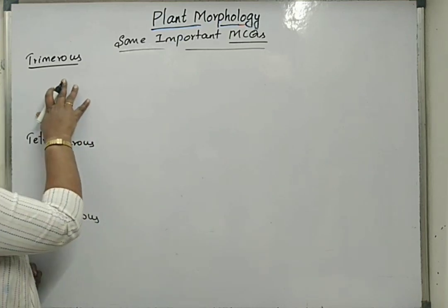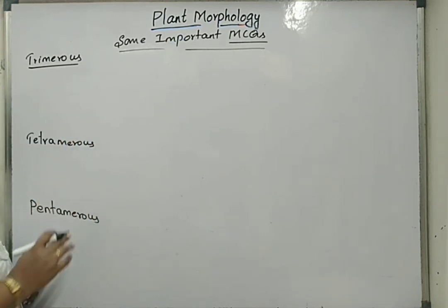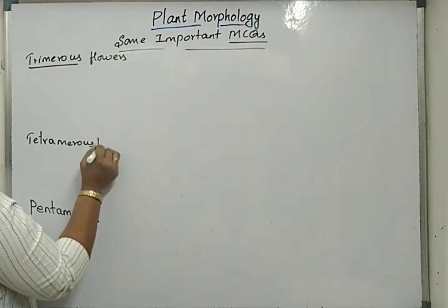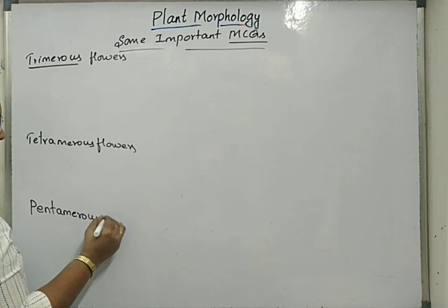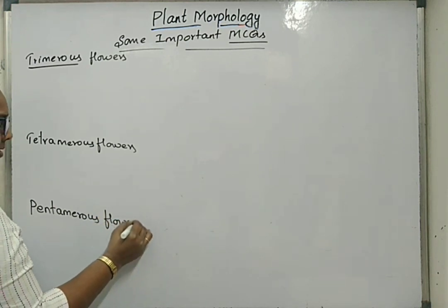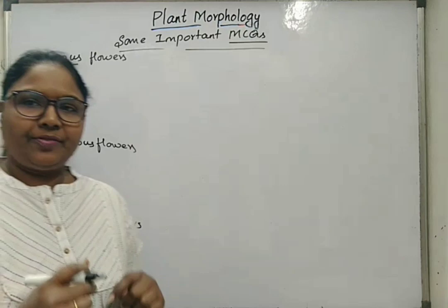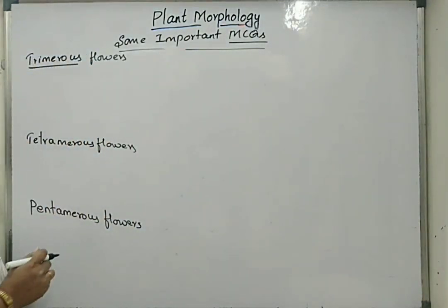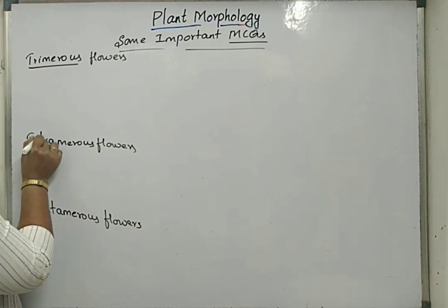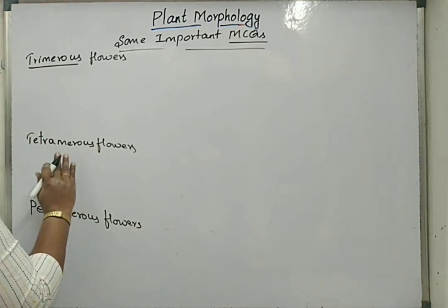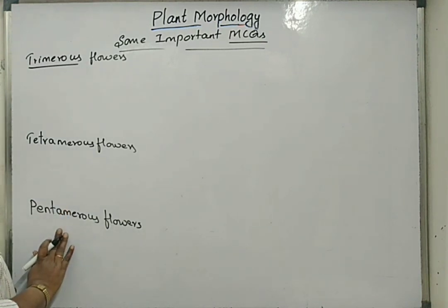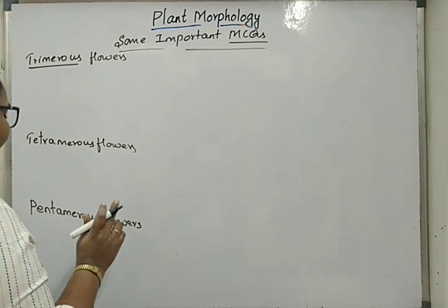Sometimes we have seen in previous year MCQs examples under trimerous types of flowers. So, examples under trimerous and the meanings of trimerous, tetramerous and pentamerous: if the petals in a flower are multiples of 3 then such flowers are called trimerous; if the petals are multiples of 4 then called tetramerous; if the petals are multiples of 5 then called pentamerous flowers.